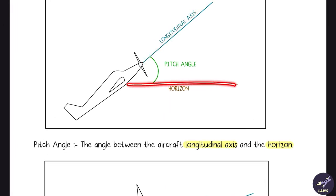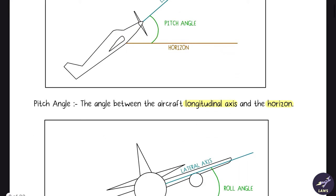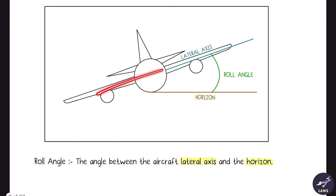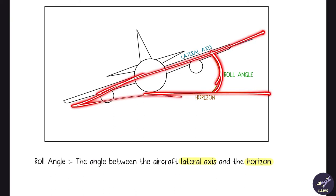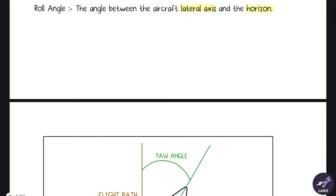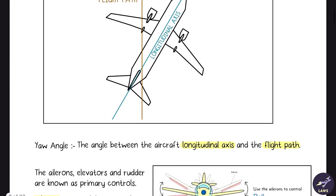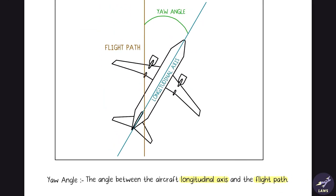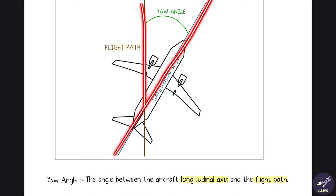Roll angle is the angle between the lateral axis and the horizon. Finally, the yaw angle is the angle between the longitudinal axis and the flight path.